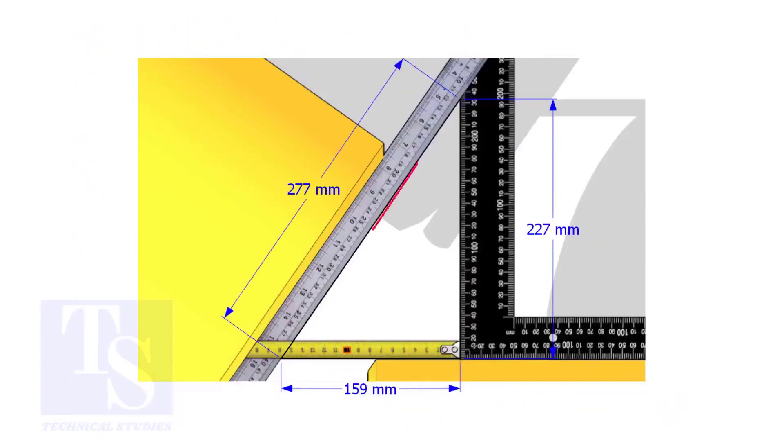Let us calculate the included angle. If you apply the sine rule, the angle will be 159 divided by 277, shift sine.